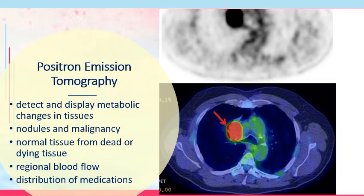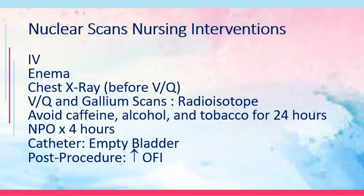The positron emission tomography (PET) scan detects and displays metabolic changes in tissues — highlighting the term metabolic. It checks for nodules, malignancy, normal vs. abnormal tissue differentiation, regional blood flow, and distribution of medications. Results are typically presented as a colored image indicating metabolism or substance usage.